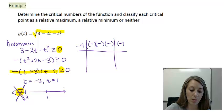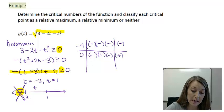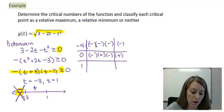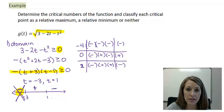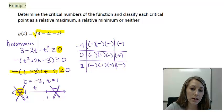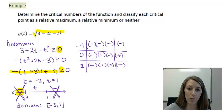Testing t = 0 between −3 and 1: we have the negative out front, (0 + 3) = positive, and (0 − 1) = negative. The product is positive, so the function is defined between −3 and 1. Testing t = 2 beyond 1: negative out front, (2 + 3) = positive, (2 − 1) = positive — product is negative, so the function is not defined there. The function is only defined on [−3, 1].